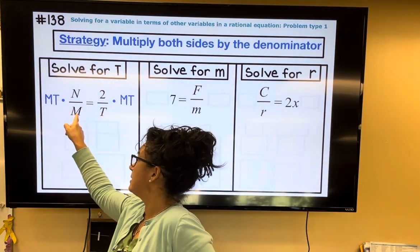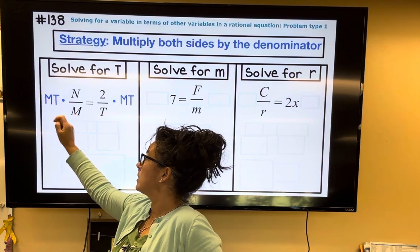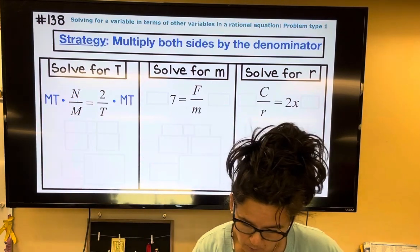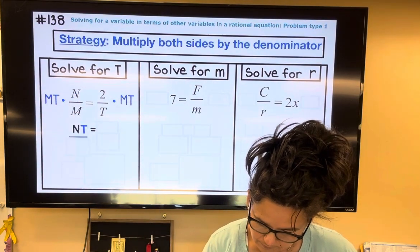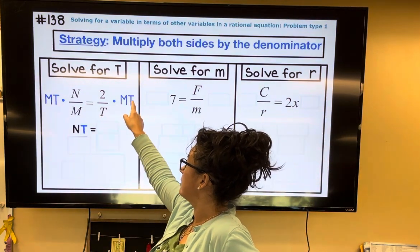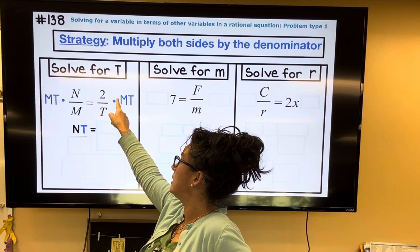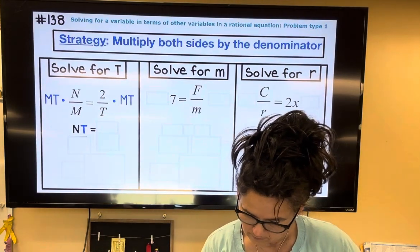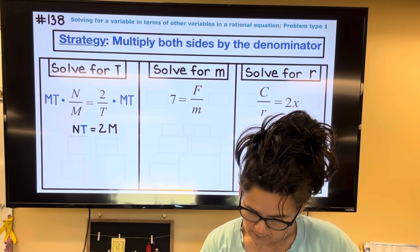When I do that, this m gets rid of this m, so what's left over is a t and an n. So t multiplied by n equals, and then on this side, this t gets rid of that t, so what's left on the right side is a 2 and an m.